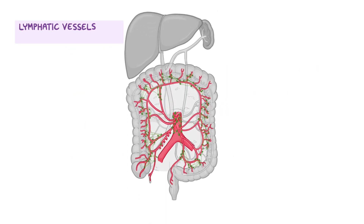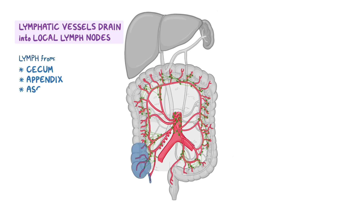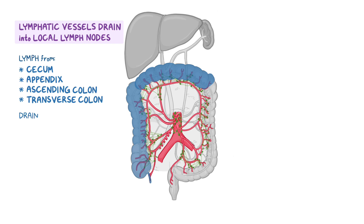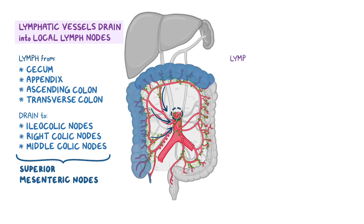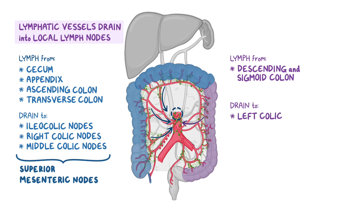Lymphatic vessels of the large intestine drain into the local lymph nodes around the intestines, and then into lymph nodes following the arteries that supply those regions. Lymph from the cecum, appendix, ascending, and transverse colon flows to the ileocolic nodes, right colic nodes, and middle colic nodes, respectively, which all drain into the superior mesenteric lymph nodes. Lymphatics from the descending and sigmoid colon drain into the left colic lymph nodes along the left colic artery, and eventually pass into the inferior mesenteric lymph nodes.